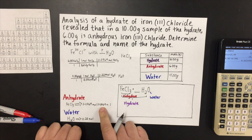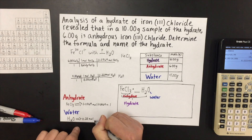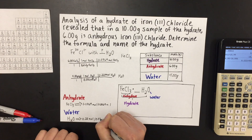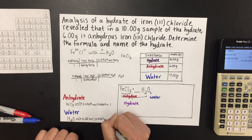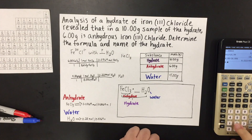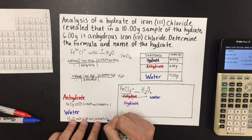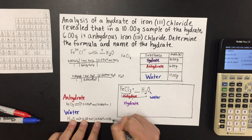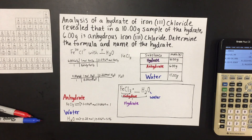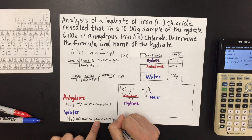For water, we are also going to divide by the smaller amount, so we do 0.22 divided by 0.0369. That gives us an answer of approximately 5.96. Since we need whole numbers, we can round up to the nearest whole number, which would be 6.